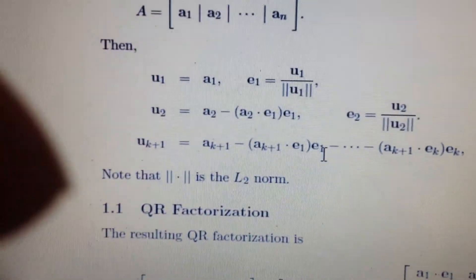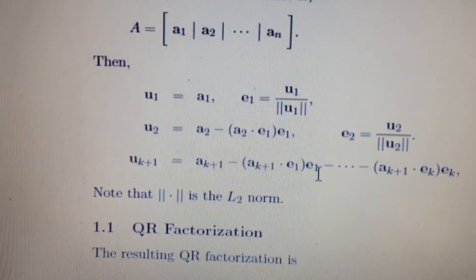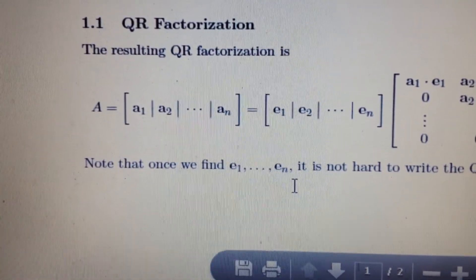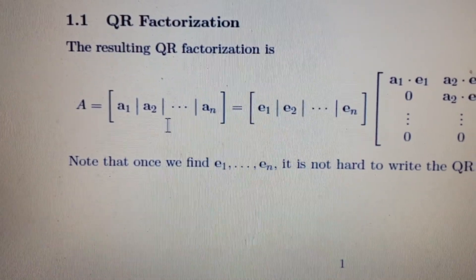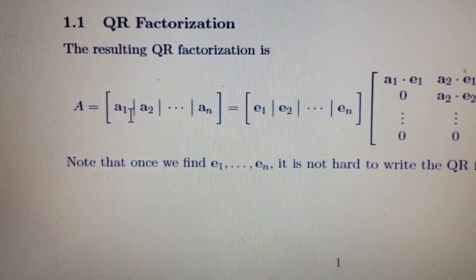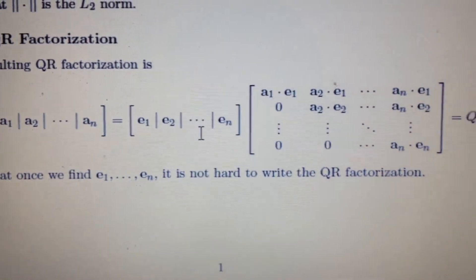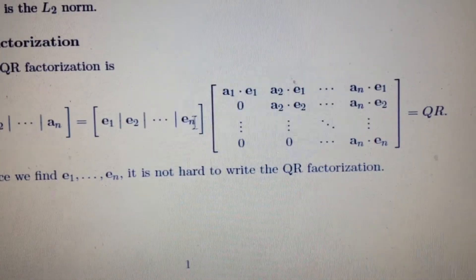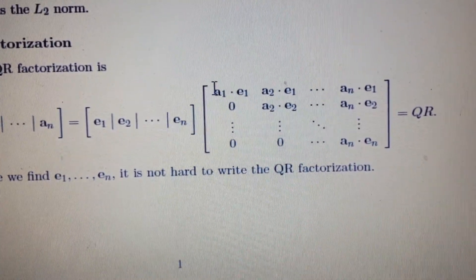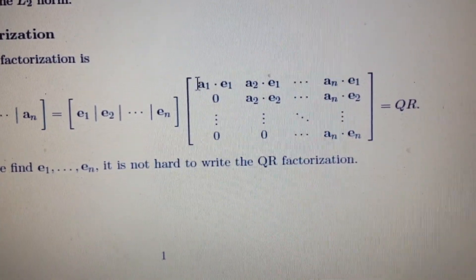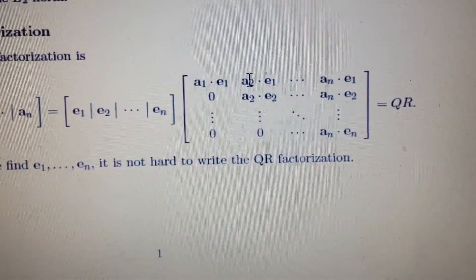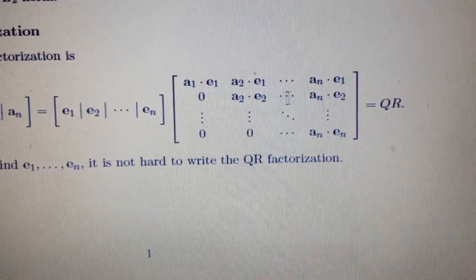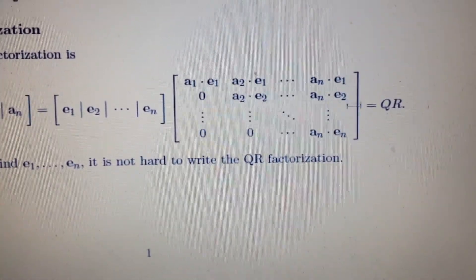Then, we go ahead and do the QR factorization. The resulting QR factorization is broken up into these column vectors, which is written out as the direction vectors E1 through EN, and then the specific components are A1 in that direction of E1, A2 has an E1 component and an E2 component, and AN has an E1 through EN component.